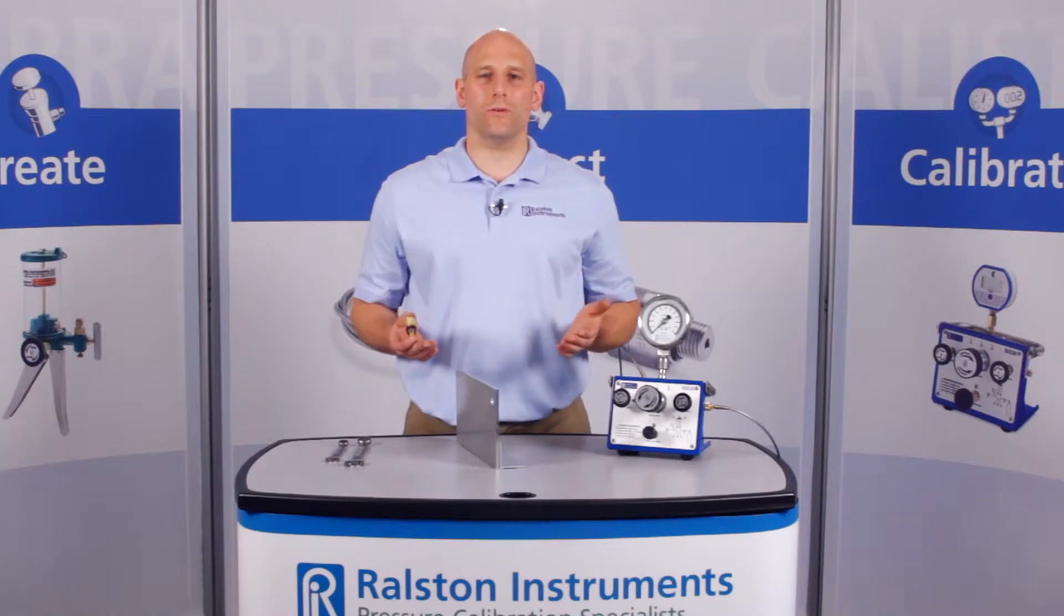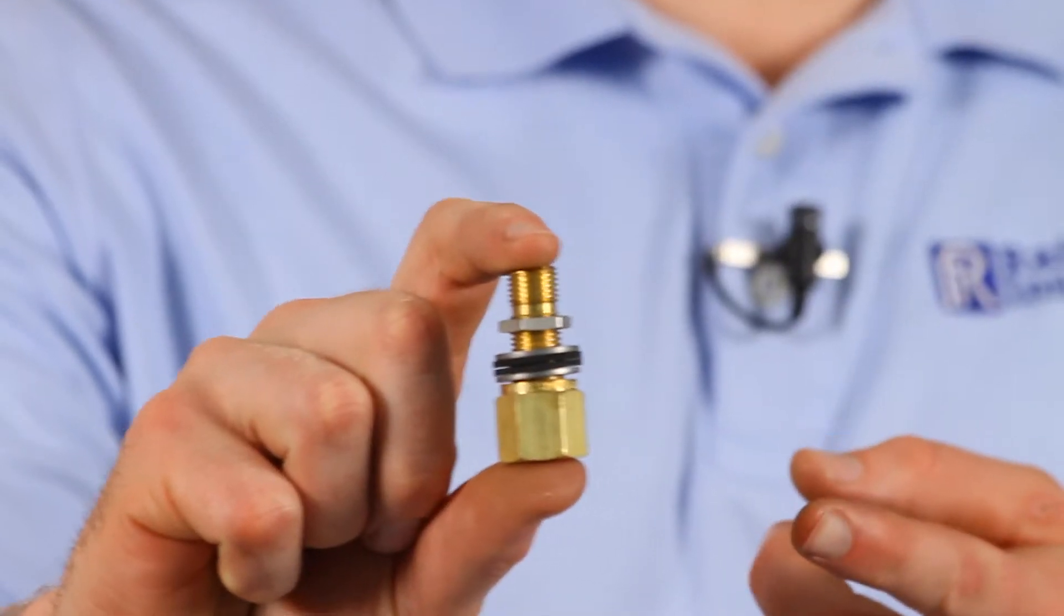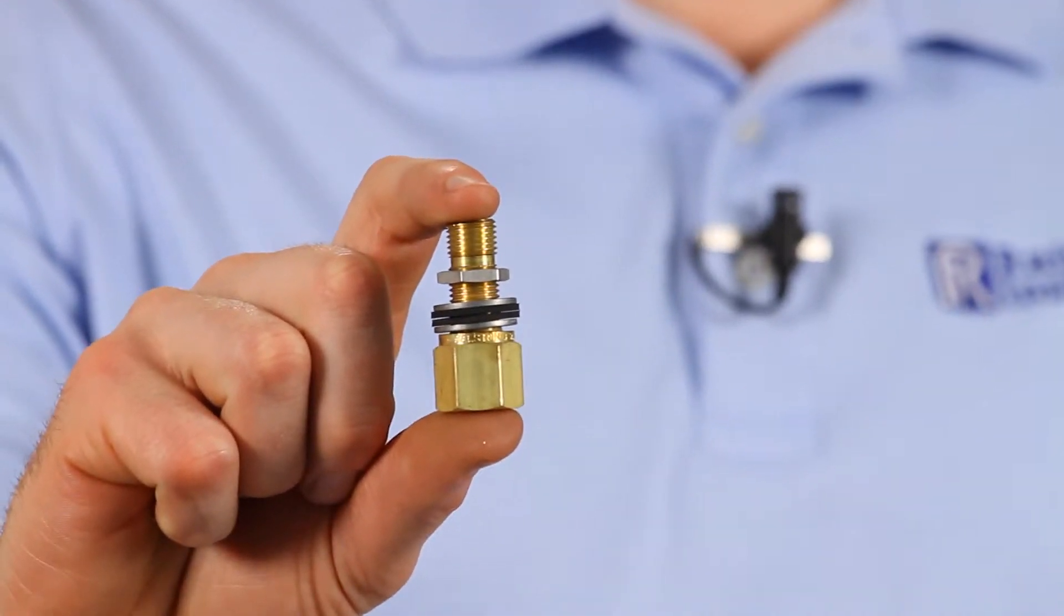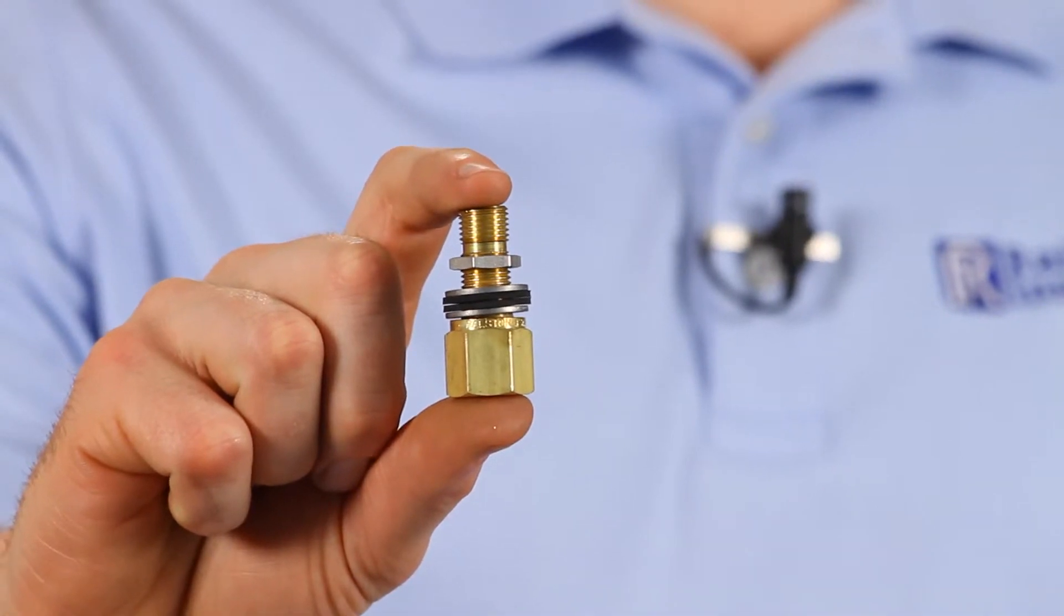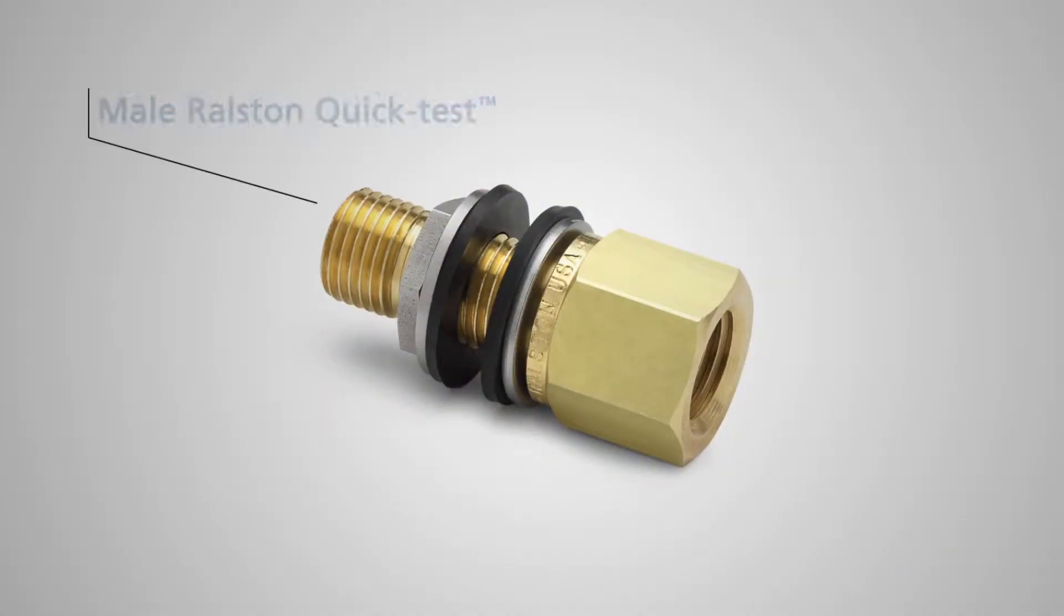I'm going to show you one of our Ralston Quick Test Bulkhead Adapters. This is the NPT Female Ralston Quick Test Bulkhead Adapter. It has a male quick test connection on one end and a female NPT connection on the other, with washers and gaskets to seal it against the panel.